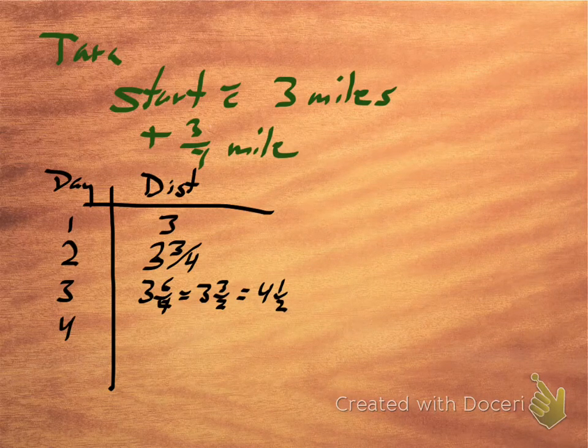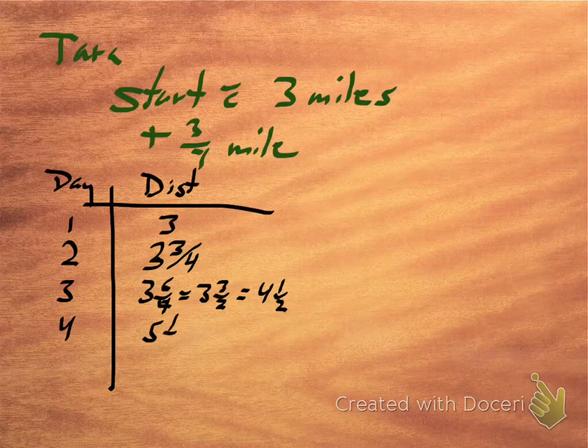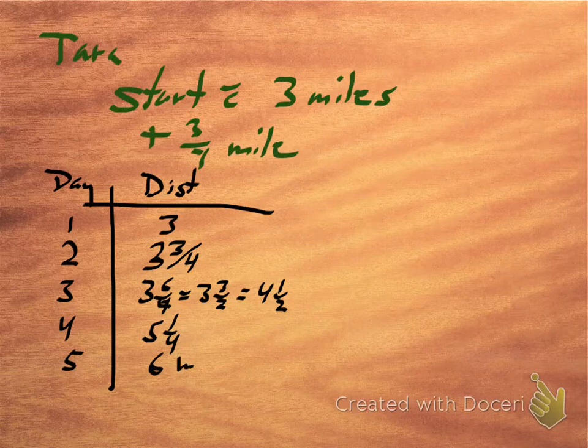Day four, we're going to add another three-fourths of a mile. That's going to bring us up to five and a quarter. And day five, add three-fourths to five and a quarter, and we're going to get six miles.